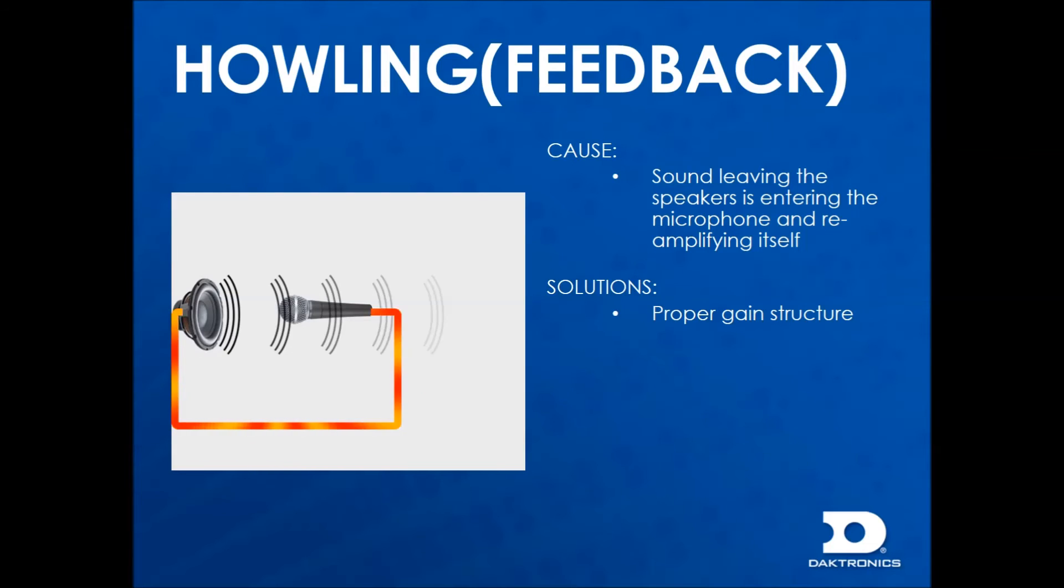To fix feedback issues, the first step is to make sure proper gain structure is used. It is also important to note that the right type of microphone is used. For example, a referee wants to use a lapel style microphone but there is a headset available.